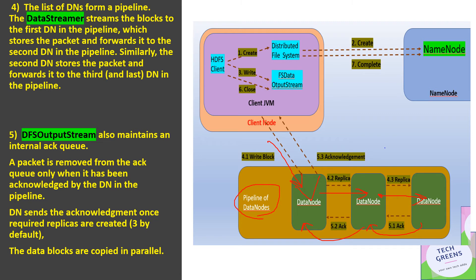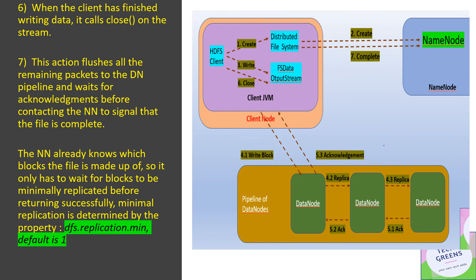The data output stream maintains one acknowledgement queue, and packets are only removed from the data queue once the acknowledgement is received for those particular block packets. One important point to note here is that the data blocks are copied in parallel — it's not a sequential operation. The writing of data blocks on the DataNodes happens in parallel, as shown in step number six.